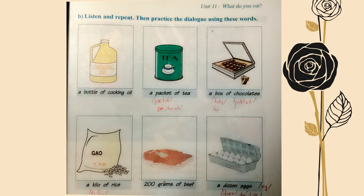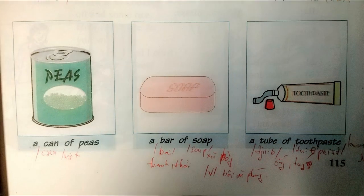B. Listen and repeat. Then, practice the dialogue using these words. A bottle of cooking oil. A packet of tea. A box of chocolates. A kilo of rice. 200 grams of beef. A dozen eggs. A can of peas. A bar of soap. A tube of toothpaste.